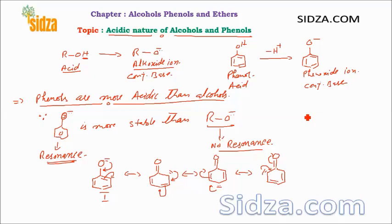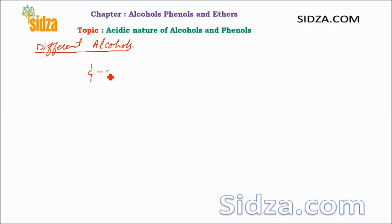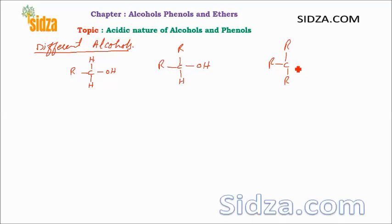Now, what about the different types of alcohols — primary, secondary, and tertiary? Among these, primary alcohols are more acidic than secondary and tertiary. The primary alcohol has the OH group attached to a primary carbon (attached to only one alkyl group), secondary has two alkyl groups, and tertiary has three alkyl groups.